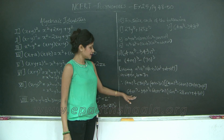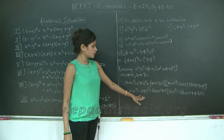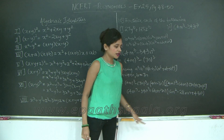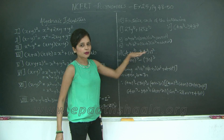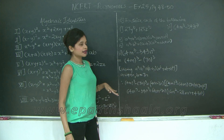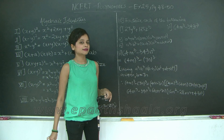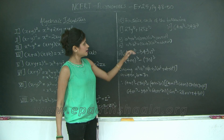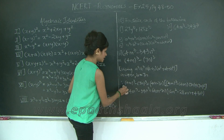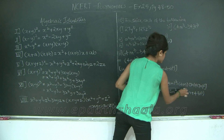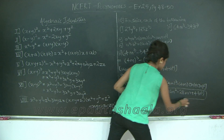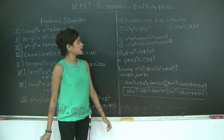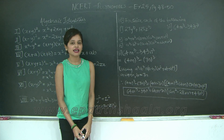Therefore, I have factorized 64m cube minus 343n cube into the product of its factors using the formula a cube minus b cube is equal to a minus b into a square plus ab plus b square. Let us box our answer. With this we have completed question number 10.